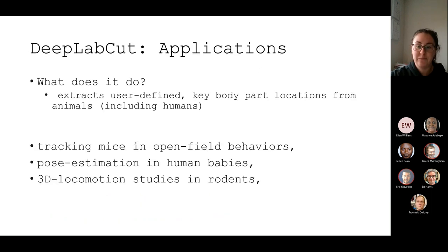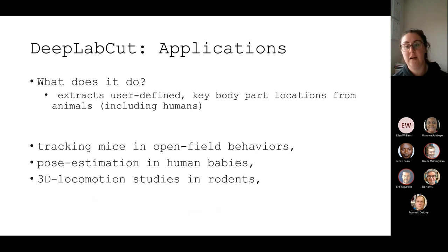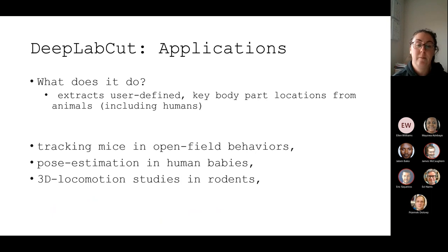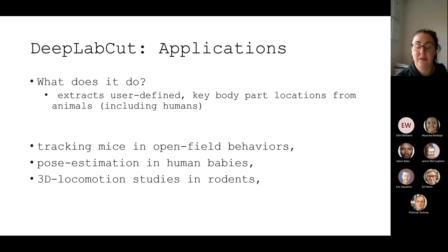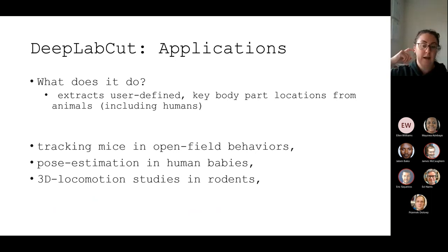Some of the applications: it extracts user-defined key body parts — so that's what you've told it to extract initially, making it a supervised learning model. It works for humans as well as every other animal. Examples include mice tracking in open fields, pose estimation in human babies, and locomotion studies in rodents — where a rodent is running around in a box and they've identified which direction it's running.